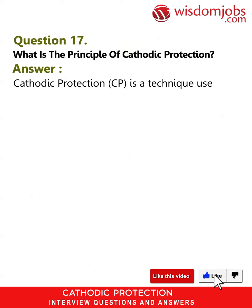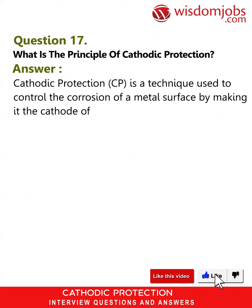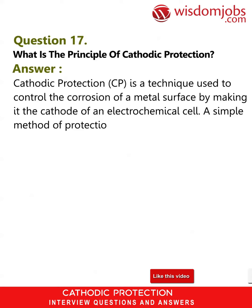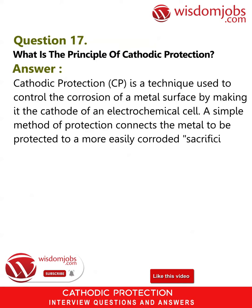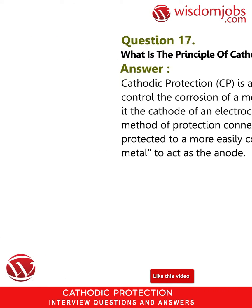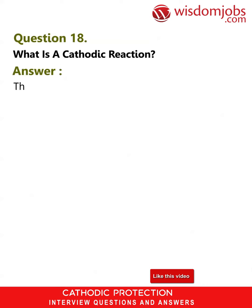Question 17: What is the principle of cathodic protection? Answer: Cathodic protection (CP) is a technique used to control the corrosion of a metal surface by making it the cathode of an electrochemical cell. A simple method of protection connects the metal to be protected to a more easily corroded sacrificial metal to act as the anode.